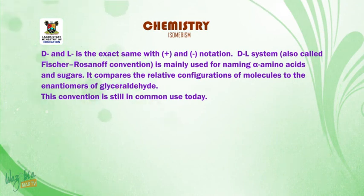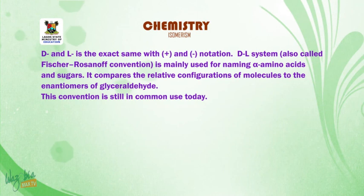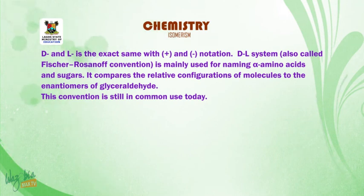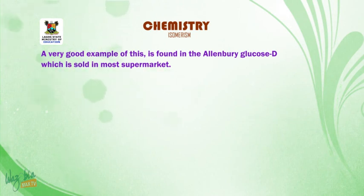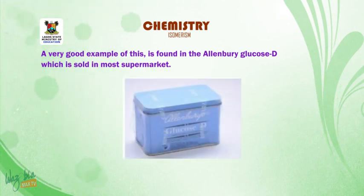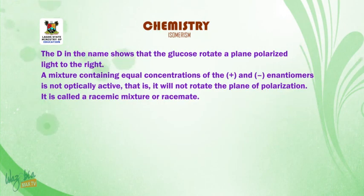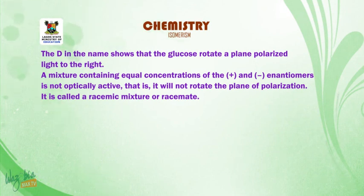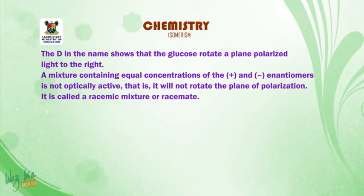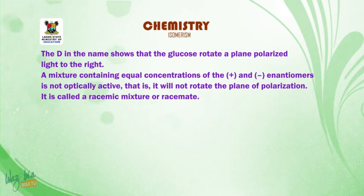The D and L system, also known as the Fischer-Rosanoff Convention, is mainly used for naming alpha amino acids and sugars. It compares the relative configuration of molecules to enantiomers of glyceraldehyde. A well-known example is D-glucose, sold in most supermarkets — the D indicates the glucose rotates plane-polarized light to the right. A mixture containing equal concentrations of plus and minus enantiomers is not optically active and will not rotate the plane of polarization; it is called a racemic mixture. Thank you for listening.